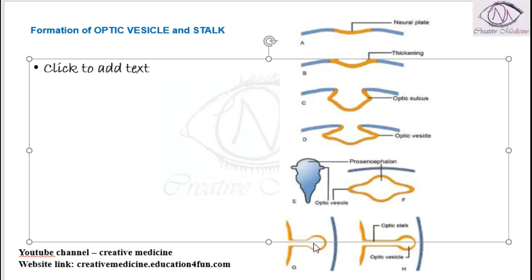From this optic stalk and optic vesicle, there is development of the eye. So from the neural plate there is development of optic stalk and optic vesicle.